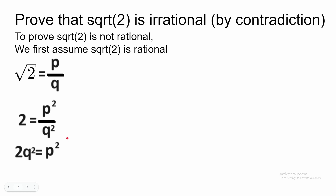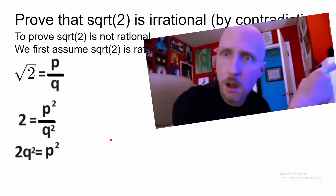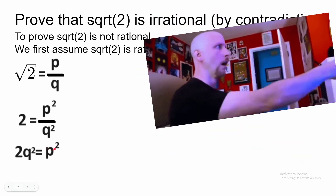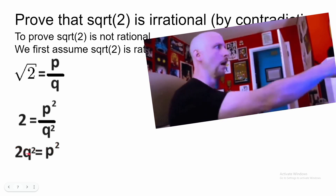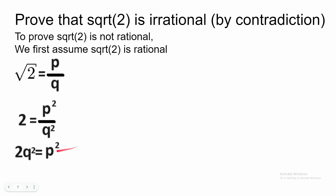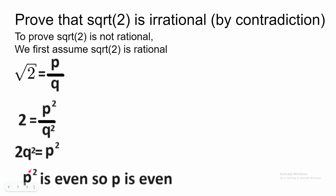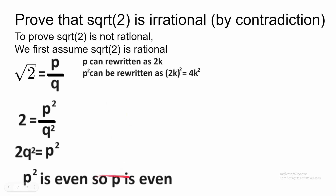Look at what we have now. What is P squared? P squared must be even, because P squared is equivalent to 2 times an integer — 2 times an integer must be even. Since P squared is even, P must also be even. Since P is even, P can be rewritten as 2K. And P squared can be rewritten as 2 times K squared, which is equal to 4K squared, where K is an integer.